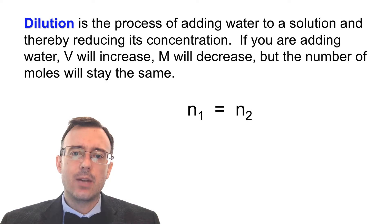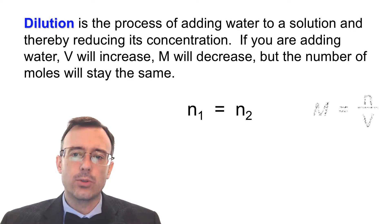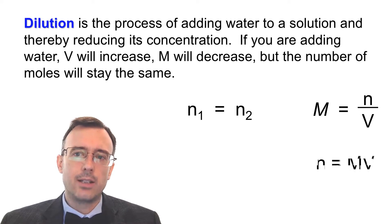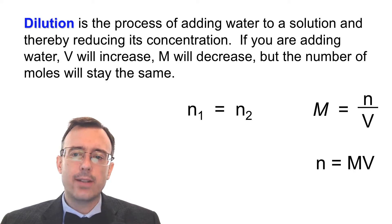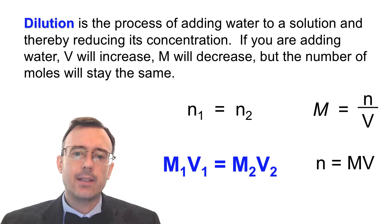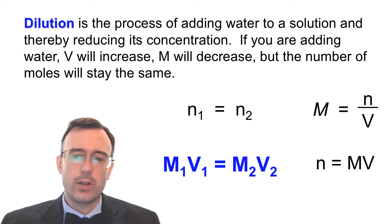So you can say that N1 equals N2 — your initial moles is going to equal your final moles. Recall that M equals n over V, and we can rearrange that to solve for n: n equals M times V. We multiply both sides by V and then replace n on both sides of that equation with MV. That's going to get us M1V1 equals M2V2, and that is our dilution equation.